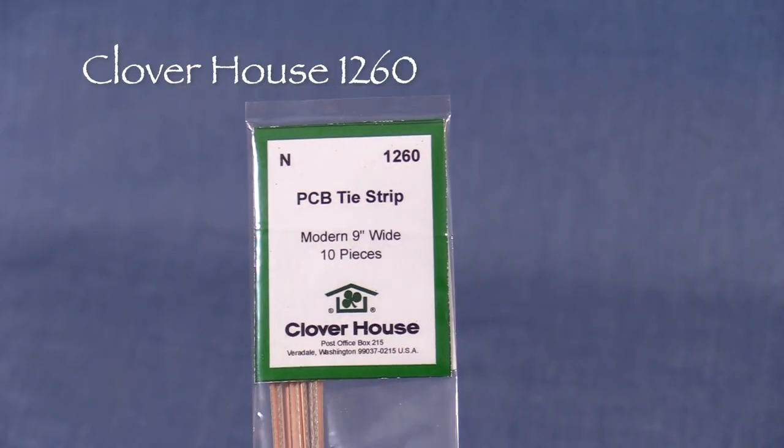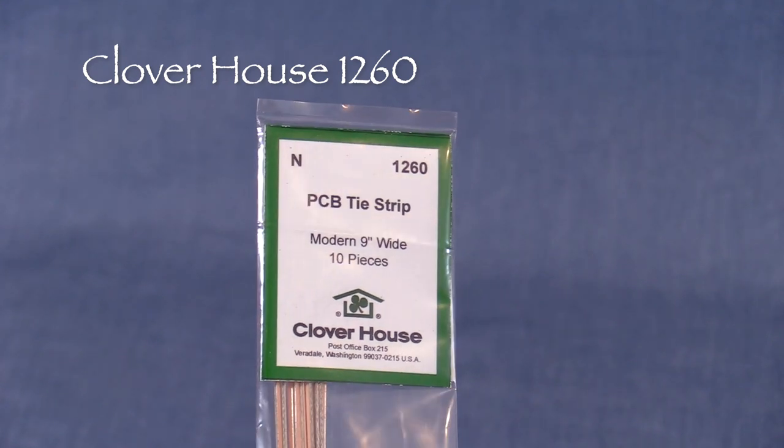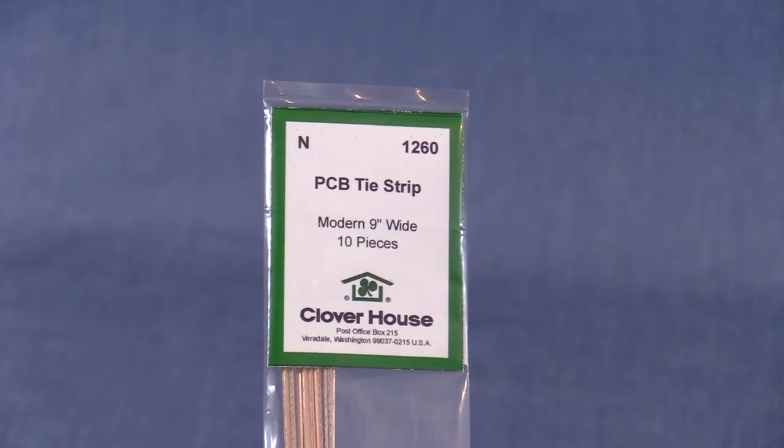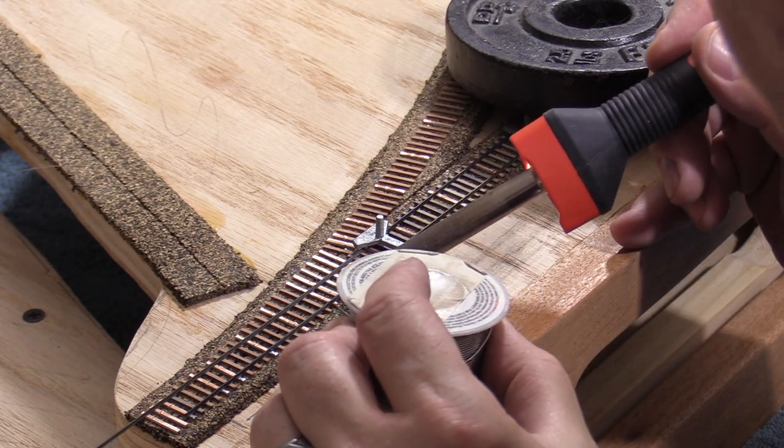Along with the wood ties, I'll be using Clover House PC board tie strips. These need to be cut to length. The PC board ties are solderable and will hold the rails.